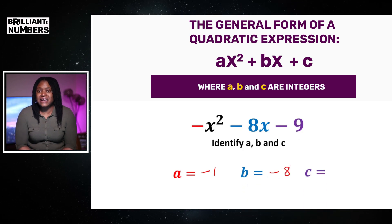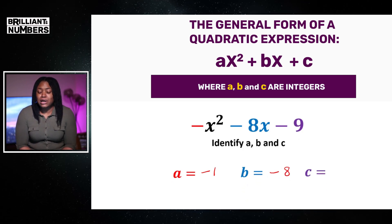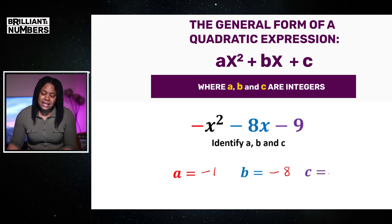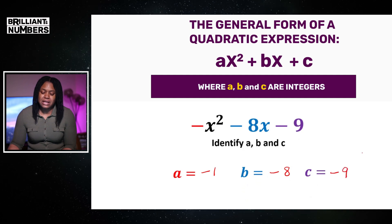And c is our constant term. And also, there is a sign before 9. So, therefore, c is equal to negative 9.